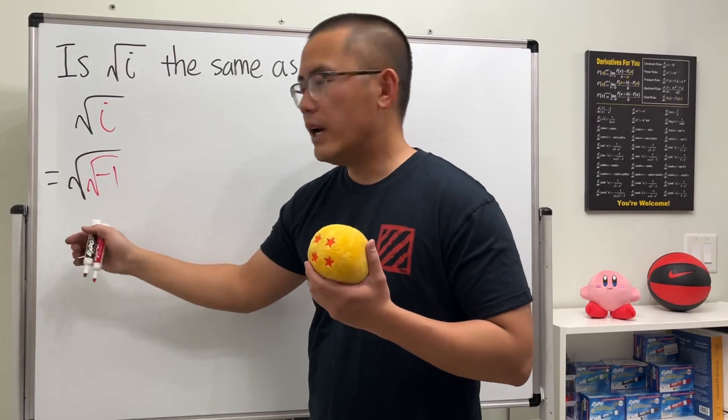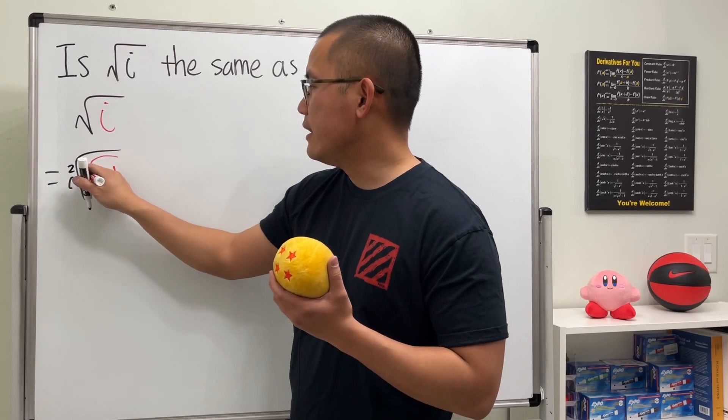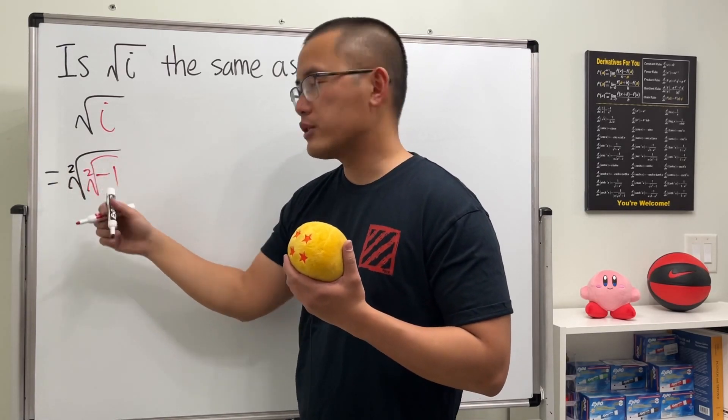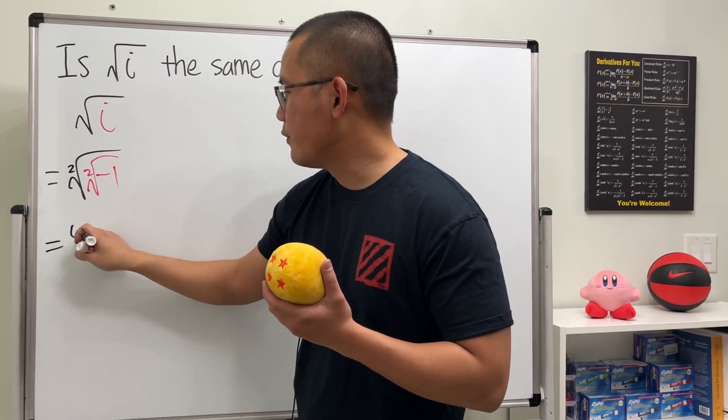When we have square root, the index is two, and likewise this index is two, so you can actually just work on the index and you end up with the fourth root of negative one.